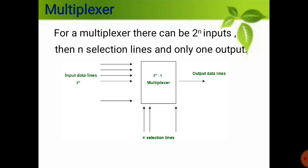There, 2 to the power n input lines are there. We also have n selection lines in this multiplexer, and it produces only one output line as per the selection lines.